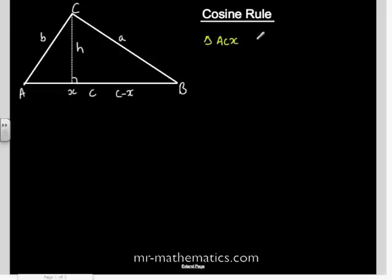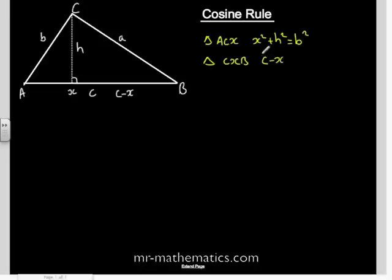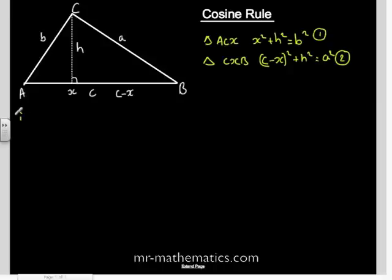We are going to use Pythagoras' theorem with triangle ACX: X squared plus H squared equals B squared, where B is the hypotenuse. For triangle CXB: C minus X, all squared, plus H squared equals A squared. We have now used Pythagoras' theorem for the two right-angle triangles, and H is the same in both.